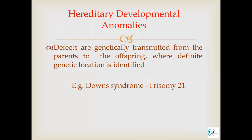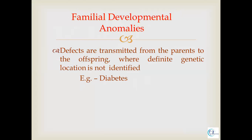The second condition is hereditary developmental anomalies, which are genetically transmitted from parents to offspring and the genetic location is identified — such as Down syndrome. The next category is familial developmental anomaly, in which defects are transmitted directly from parent to offspring but the genetic location is not identified. In hereditary anomalies the genetic location is identified, whereas in familial developmental anomalies it is not — for example, diabetes which runs in families.